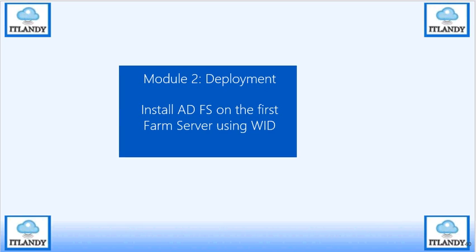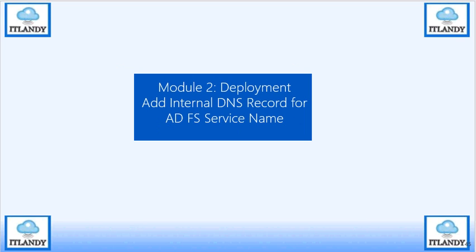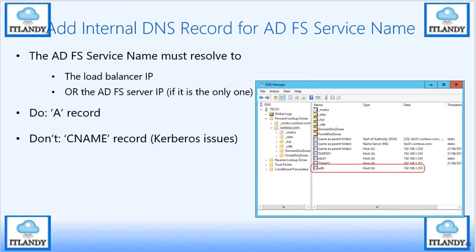DNS is really important. For the ADFS farm, internal users need to speak to the VIP of the internal farm, and external users need to go to the WAP proxy. The ADFS name must resolve to the IP of the load balancer, or to the ADFS itself if using a single machine. Use an A record — do not use a CNAME, as it will create issues.